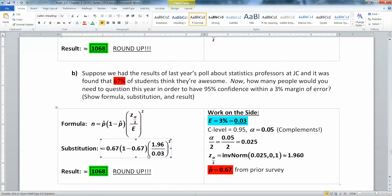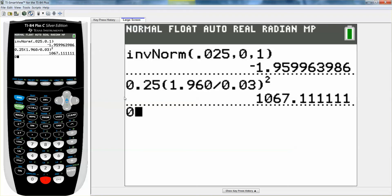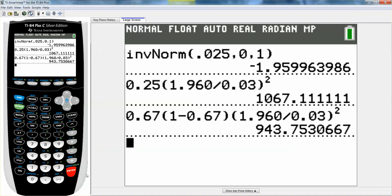You're going to use that in the formula. So instead of 0.25, you're going to have to do 0.67. So 0.67, parentheses, 1 minus 0.67, close that parentheses because that's getting your multiplication. Then you still have to do 1.960 divided by 0.03. Make sure to make it a decimal. And square it. Enter. And we get 943.75, and that would round up to 944.